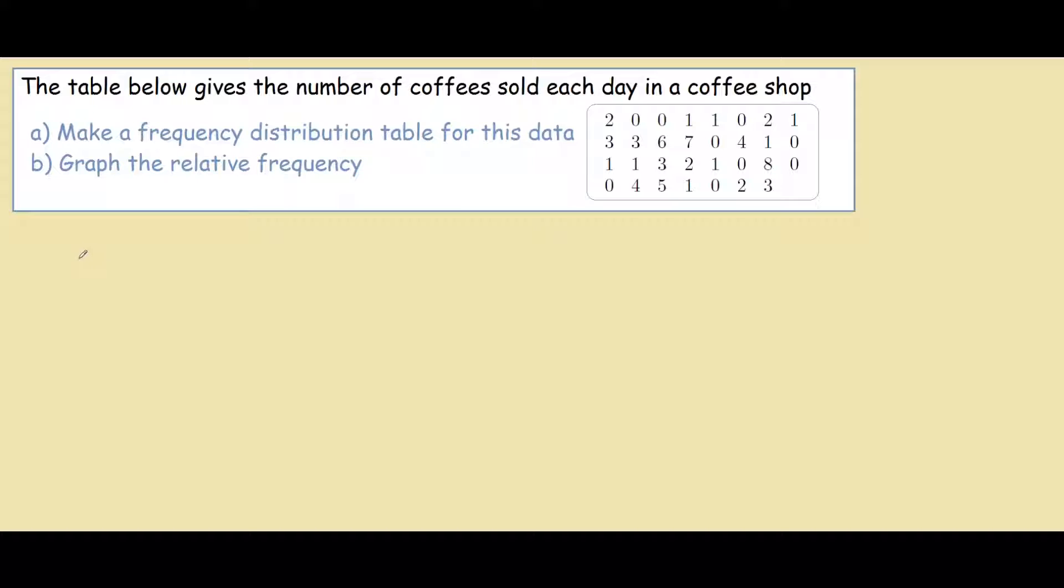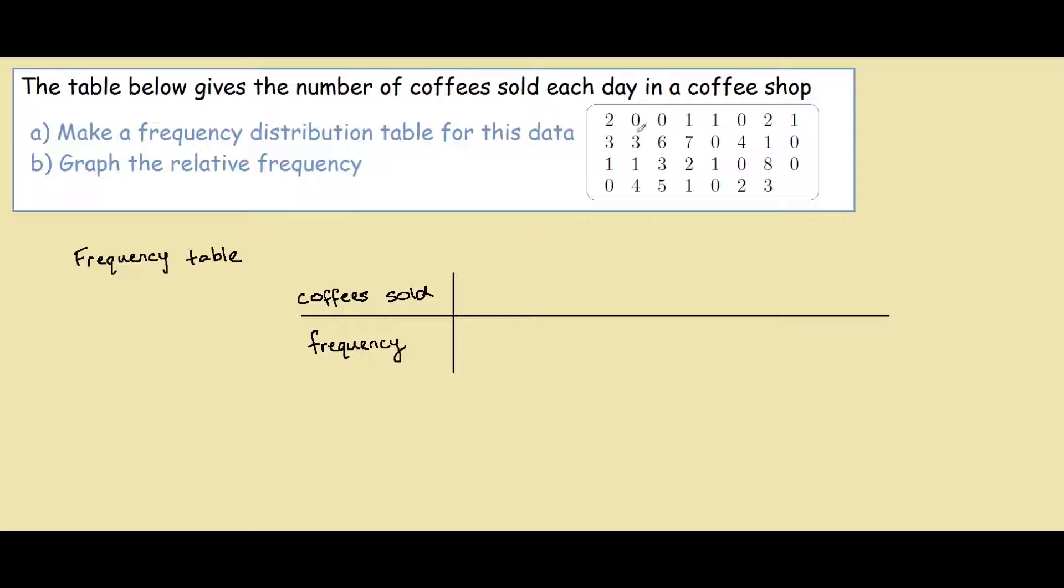So let's start off with a frequency table. We would have coffees sold and we would have the frequency in which they were sold. From our table you can see that our lowest coffees sold on one day is 0 and our highest sold on one day is 8. So on this axis we would put 0 to 8 for the number of coffees sold.